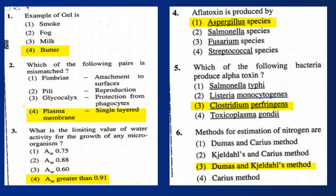Question 4: A flat toxin is produced by Aspergillus species. Question 5: Which of the following bacteria produce alpha toxin? Answer: Clostridium perfringens. Question 6: Methods for estimation of nitrogen are the Dumas and Kjeldahl method.